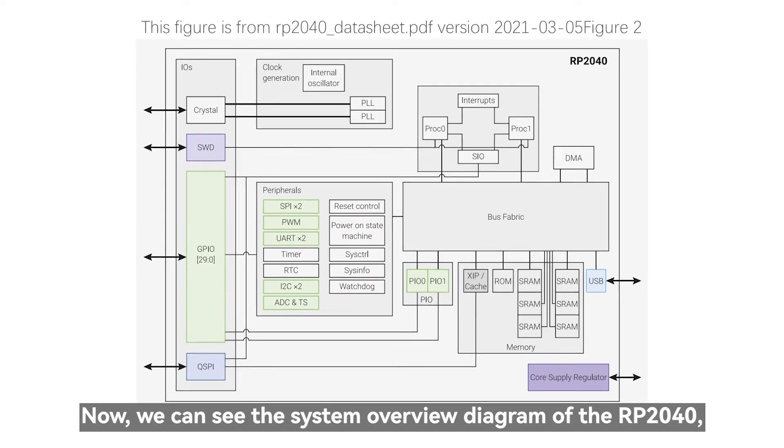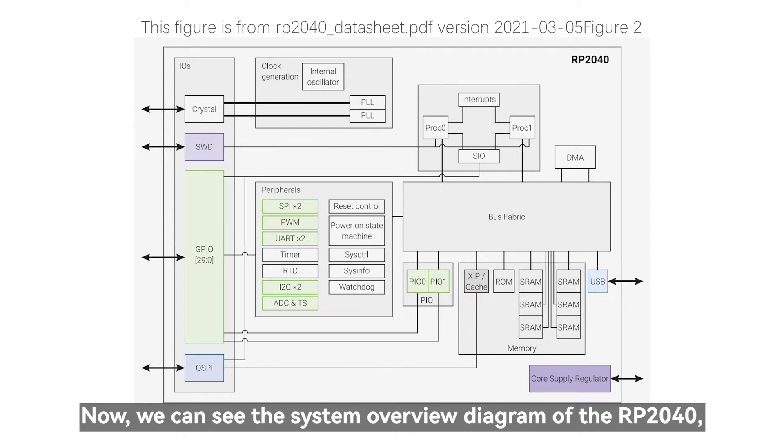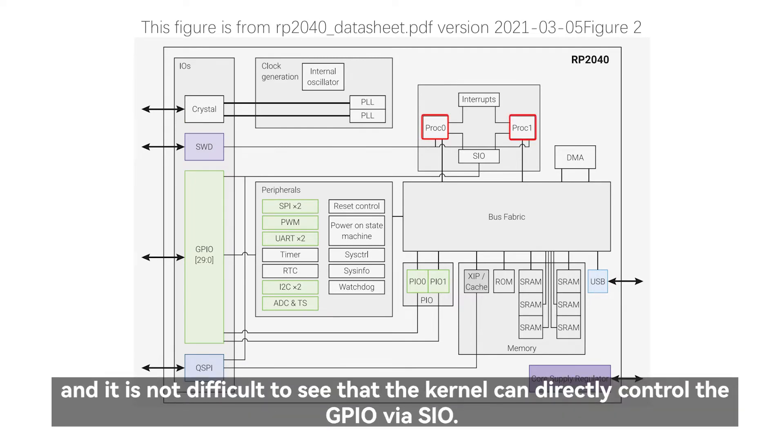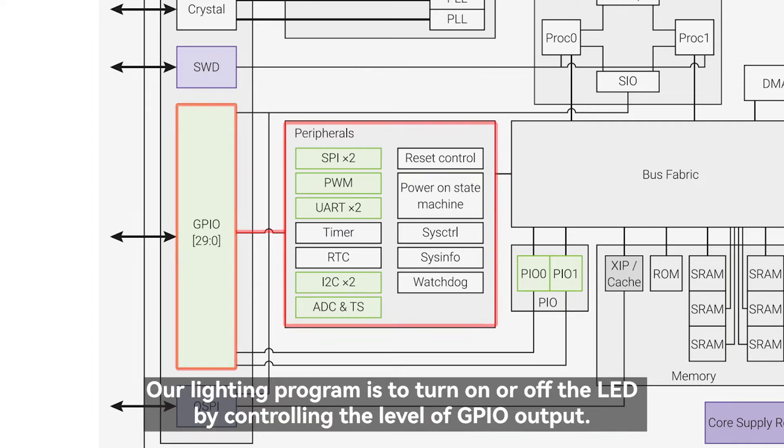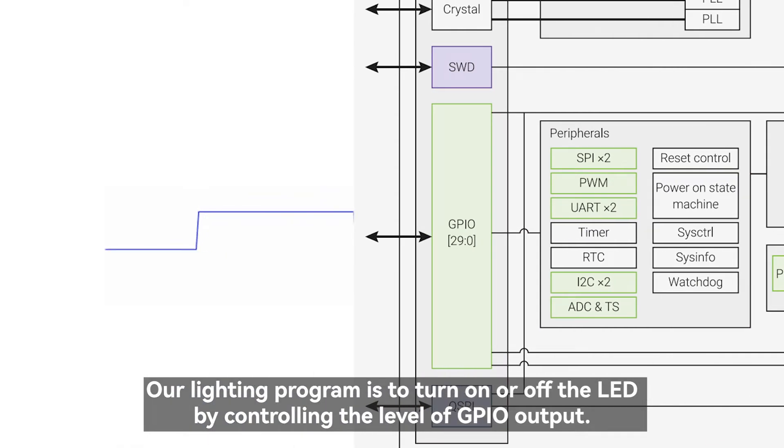Now, we can see the system overview diagram of the RP2040, and it is not difficult to see that the kernel can directly control the GPIO via SIO. However, external devices such as SPI can only achieve their functions with GPIO. Our lighting program is to turn on or off the LED by controlling the level of GPIO output.